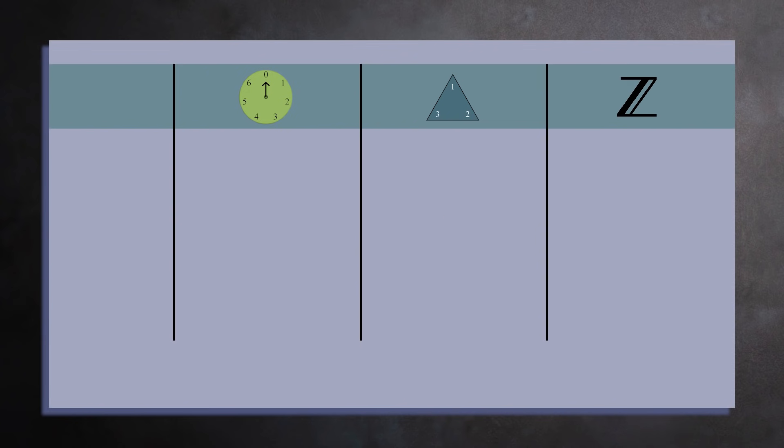There are two other important properties these examples all share. For every element, there's an opposite element, which we call the inverse. For the integers under addition, the inverse of 3 is negative 3. The inverse of 7 is negative 7, and so on. And if you add an element and its inverse, you get 0, the identity element.